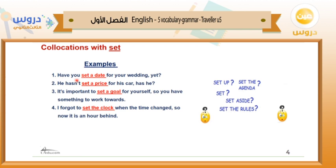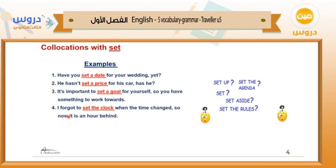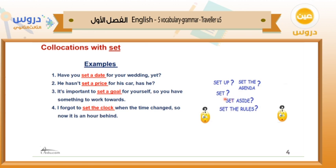Collocations with 'set' — here are some examples. Number one: 'Have you set a date for your wedding yet?' Number two: 'He hasn't set a price for his car.' Number three: 'It is important to set a goal for yourself so you have something to work towards.' Number four: 'I forgot to set the clock when the time changed, so now it's an hour behind.' Other collocations include: set up, set the agenda, set aside, and set the rules.